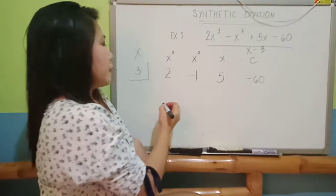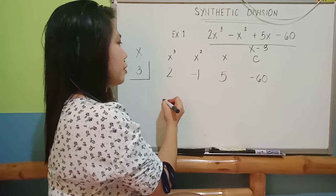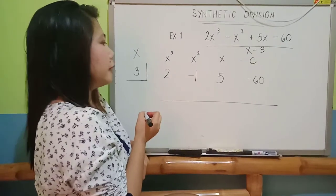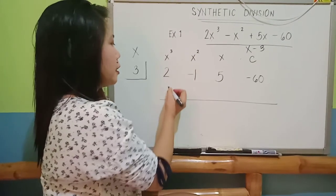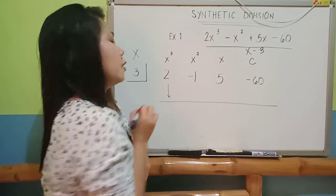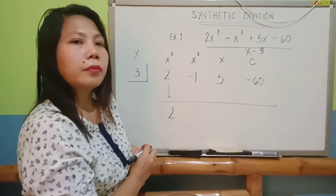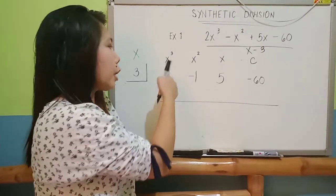What is the next thing to do? Draw a line here, a horizontal line. And then, simply, you drop down your 2. Always drop down the 2 here.